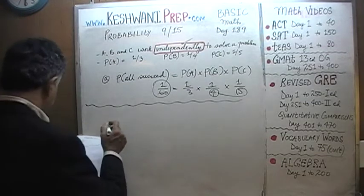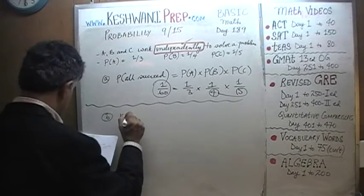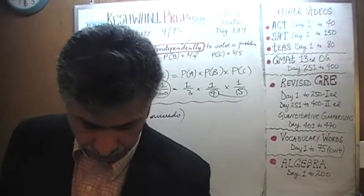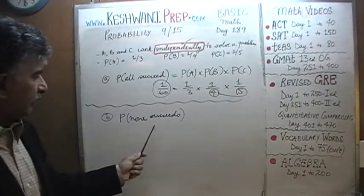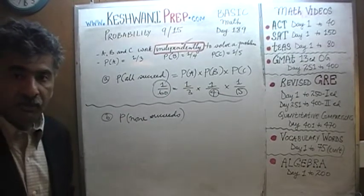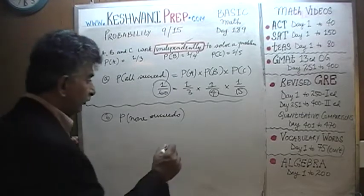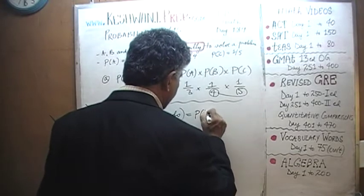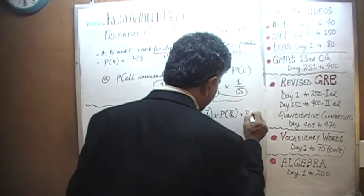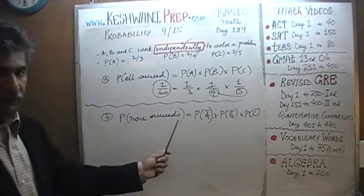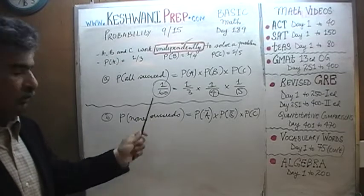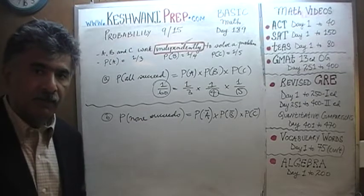The second question asks: what are the odds that no one succeeds? That's straightforward. Instead of their probability of success, we now use the probability of failure for each person and multiply them together. We write A-bar, B-bar, C-bar — meaning the odds that A, B, and C each are not successful.